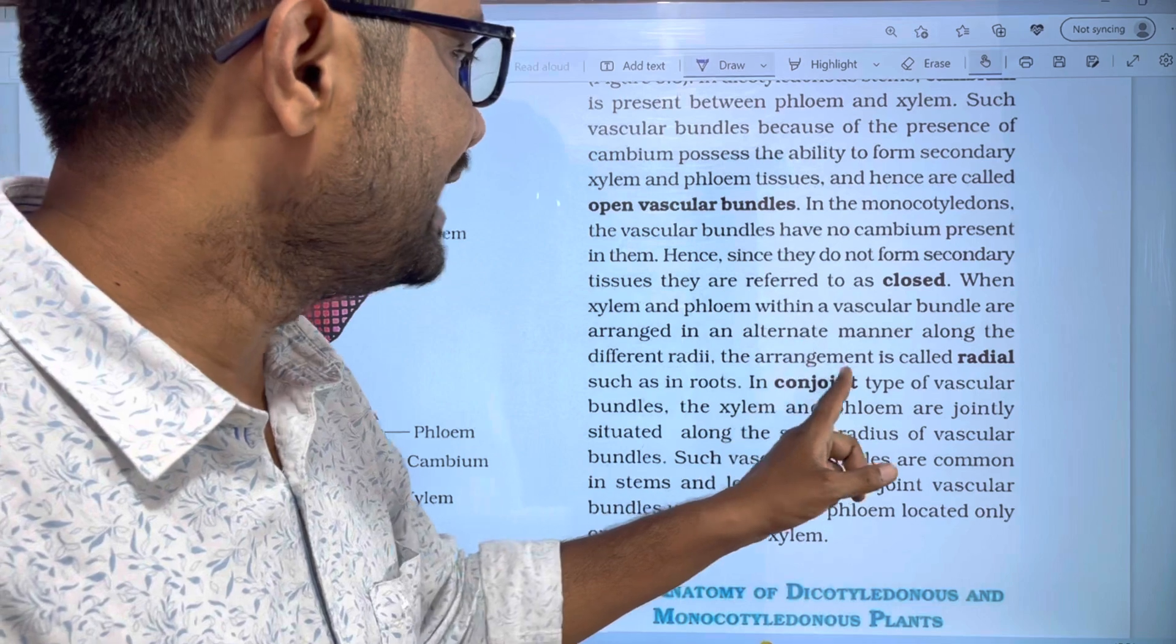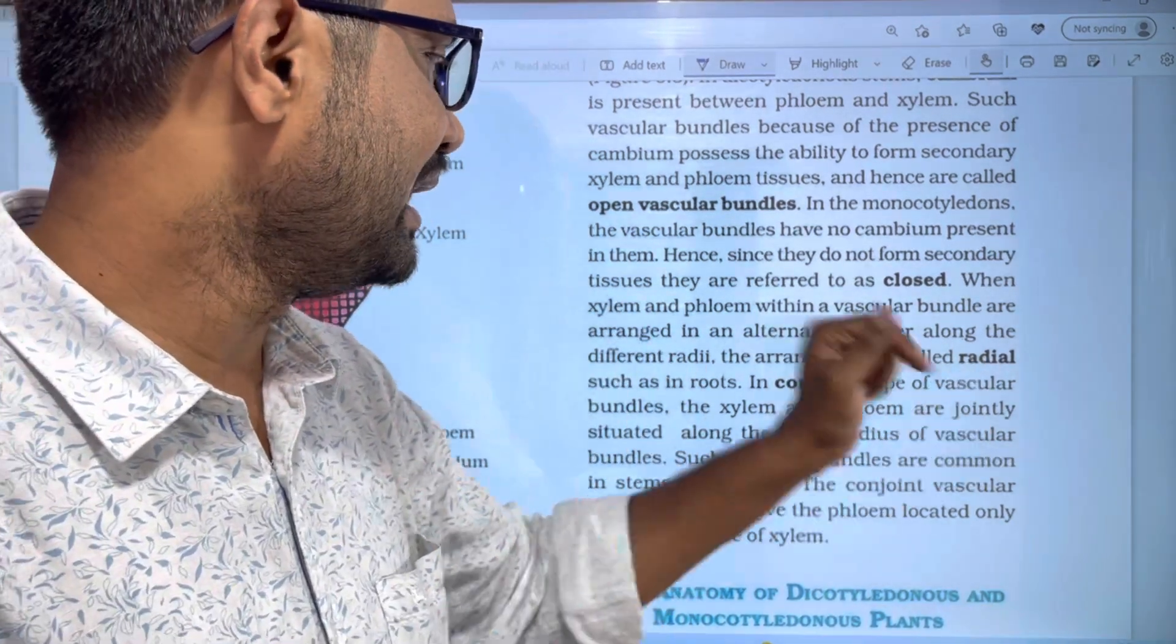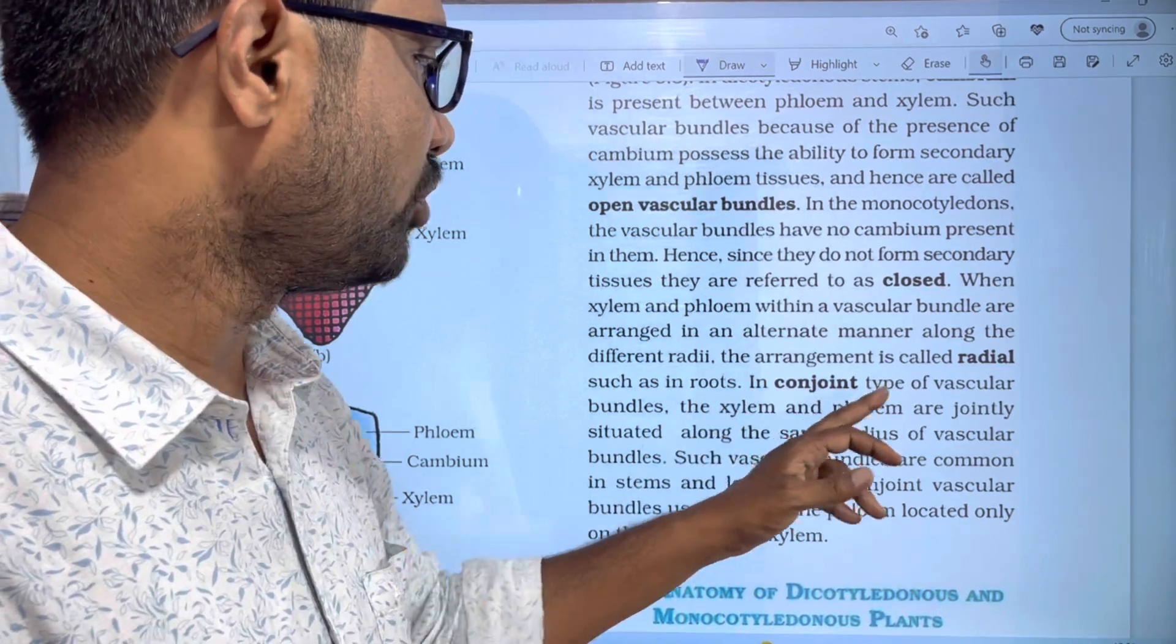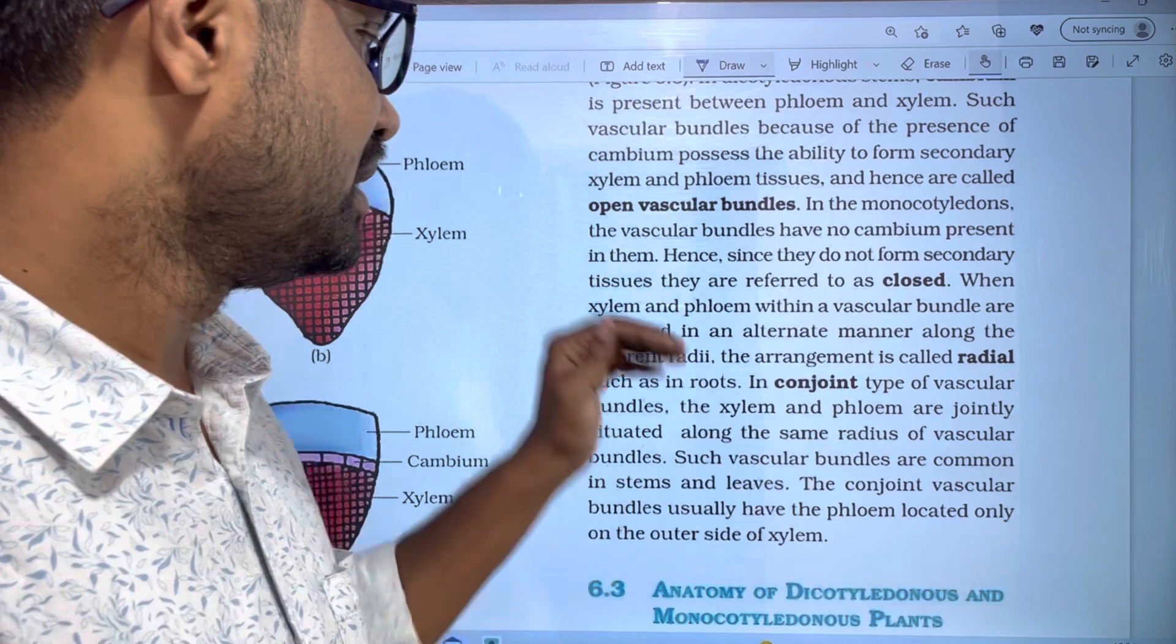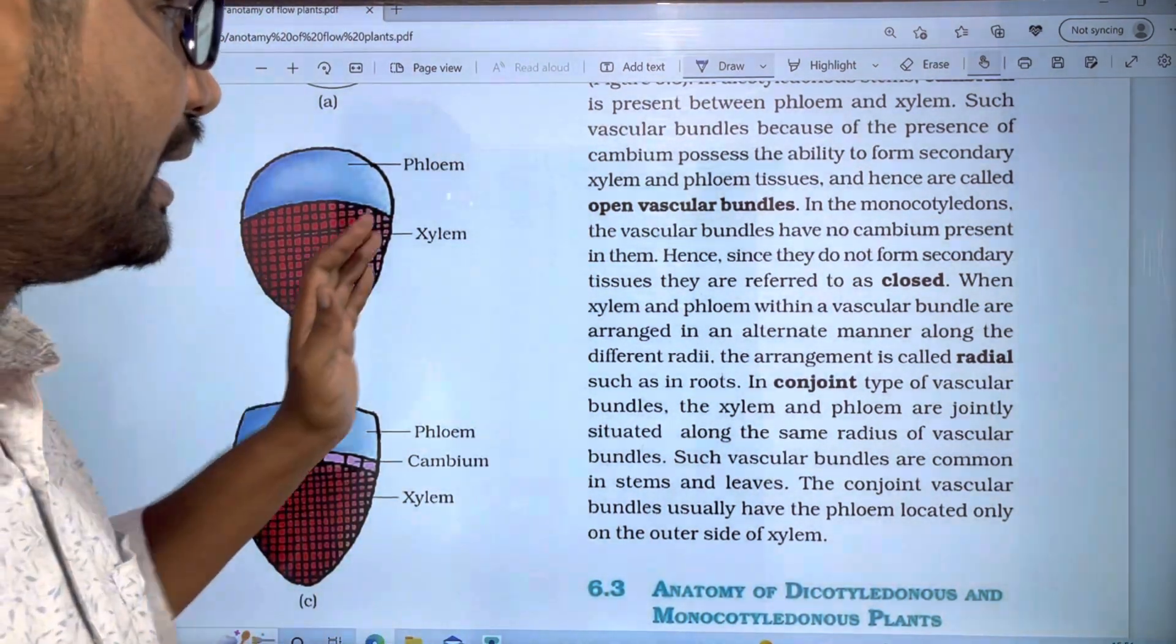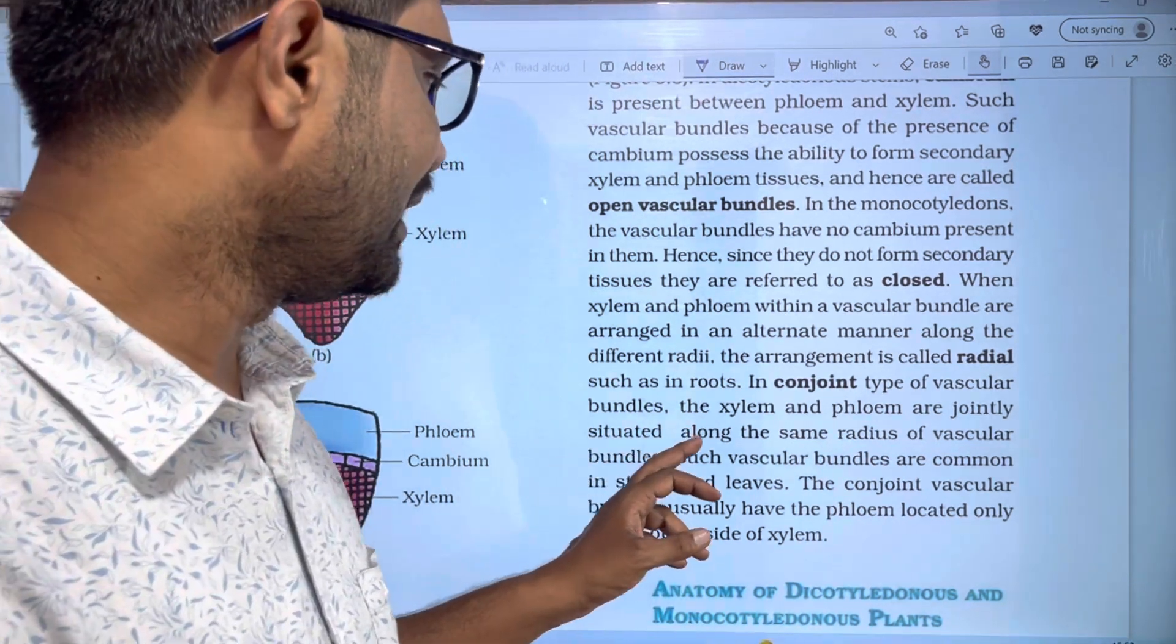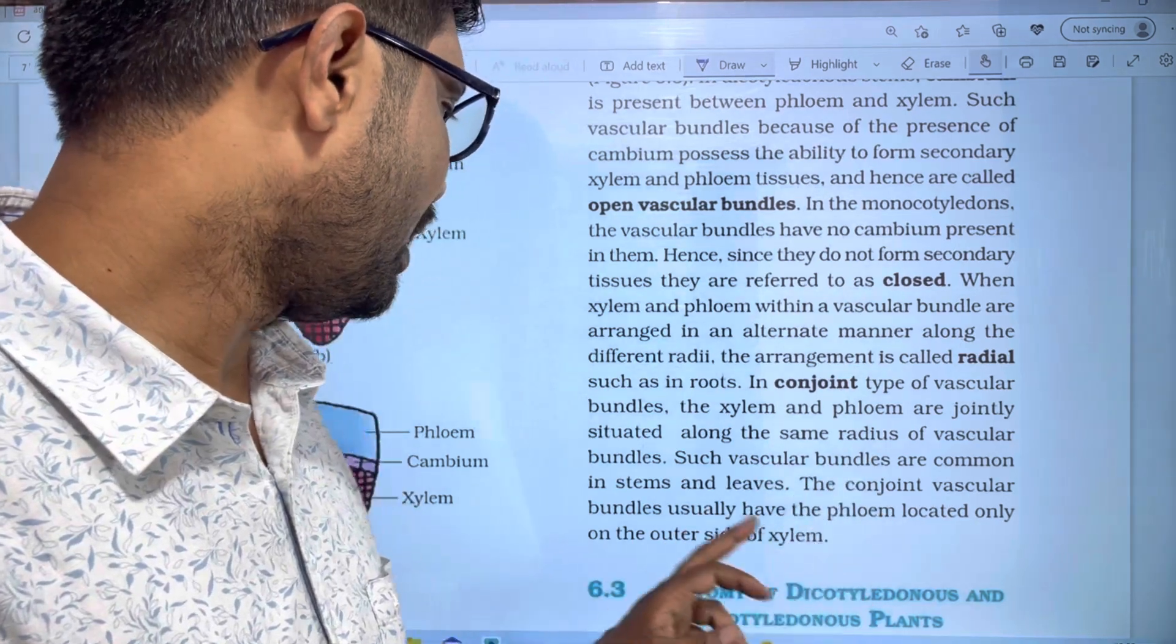In conjoint type of vascular bundles, the xylem and phloem are jointly situated along the same radius of vascular bundles. Such vascular bundles are common in stems and leaves.